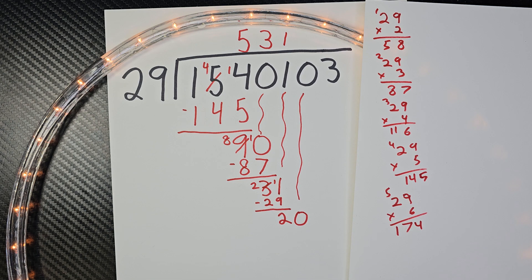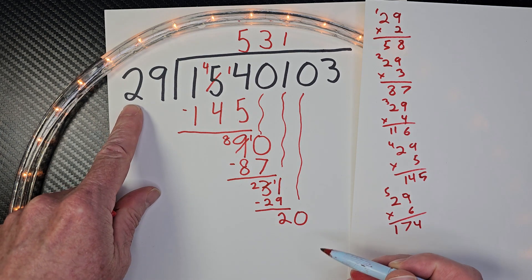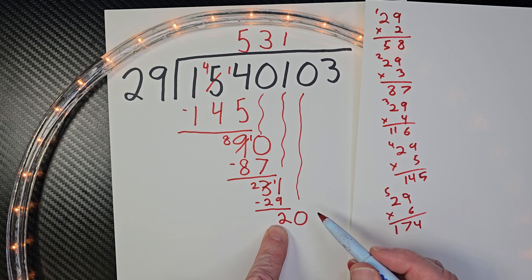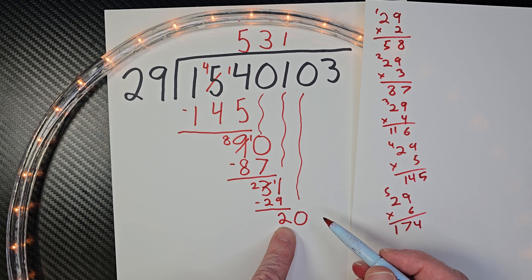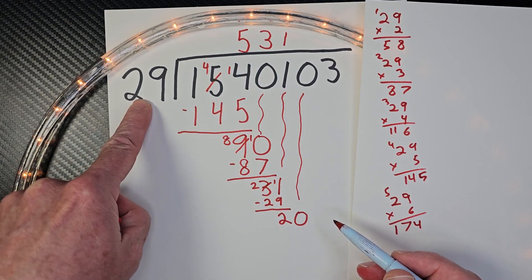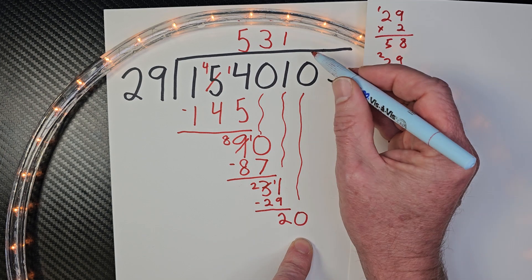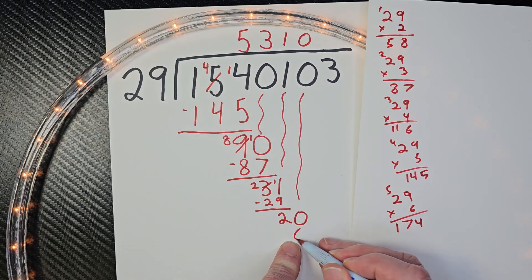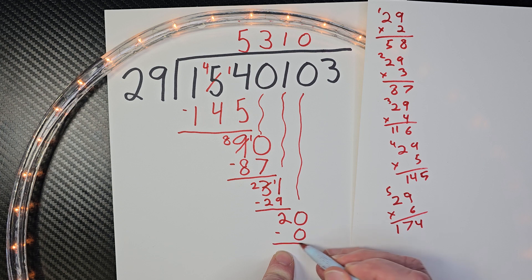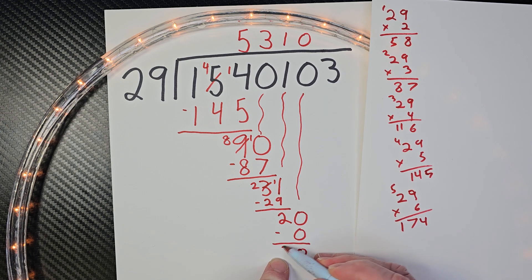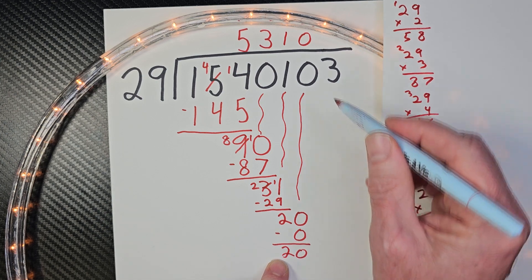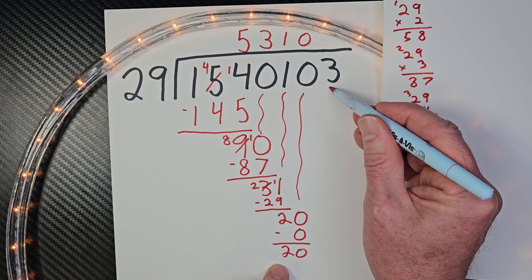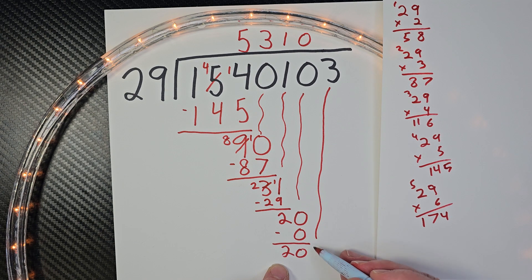Now next step, I drop the next number down and I put a 0. Now this is interesting when we get here — I have 20. What number times 29 can fit into 20? 1 times 29 is too big. Now don't forget the 0 — that is also a digit. So if I take 0 times 29, I can make it a 0. I put a 0 right here. 0 times 29 equals 0. Then I subtract, and 0 minus 0 is 0. Bring the 2 down, then bring the next number down.